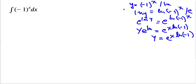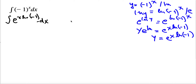But also we said y is equal to (-1)^x. So instead of (-1)^x, we are going to substitute e^(x·ln(-1)). So let's write this integral: the integral is e^(x·ln(-1)) dx. Now this x·ln(-1) we are going to substitute.